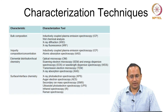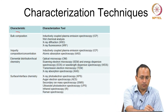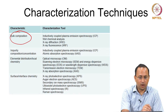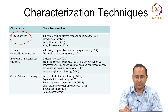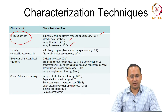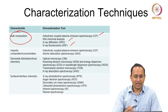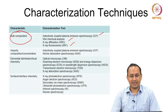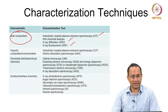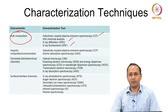For example, if we want to determine the bulk composition of a material, we can use techniques such as inductively coupled plasma emission spectroscopy (ICP), wet chemical analysis, X-ray diffraction, and X-ray fluorescence. These are commonly used techniques to determine the bulk composition.